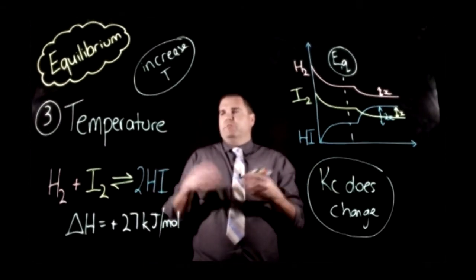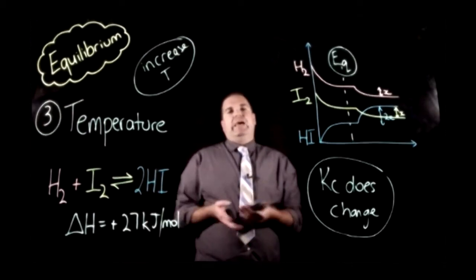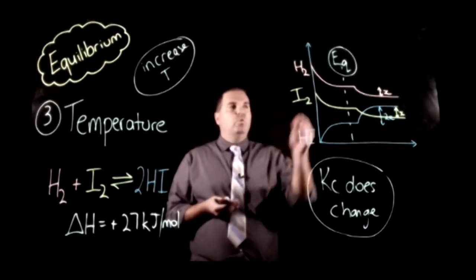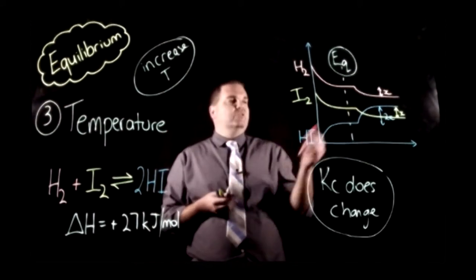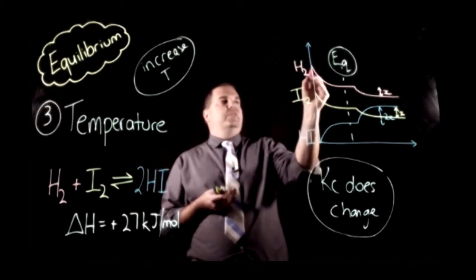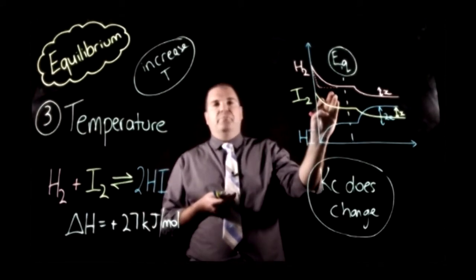Alright, there is one final thing you can do which is using a catalyst, and I haven't done a separate video on that purely because a catalyst just simply allows your equilibrium to be obtained faster. So all that does, in a sense, if we were to show on one of these graphs, if we used a catalyst, it would just mean that this hydrogen would come down and actually get to this horizontal slope faster.